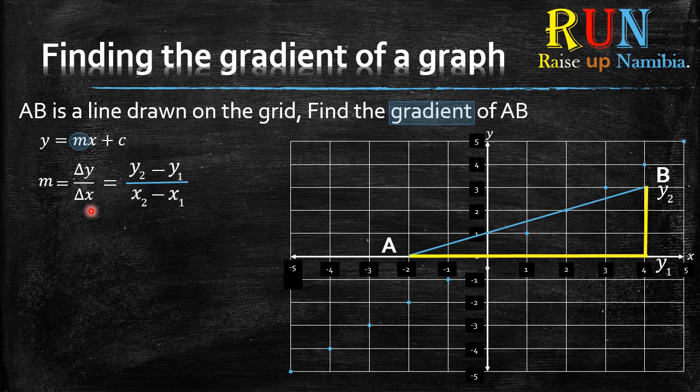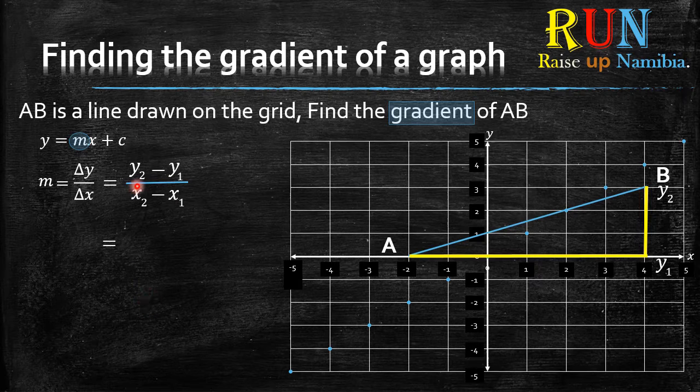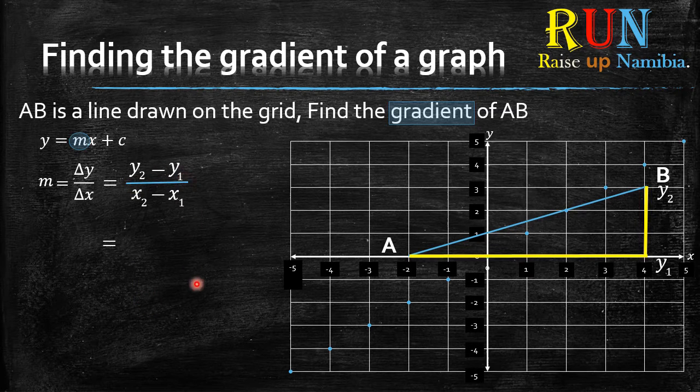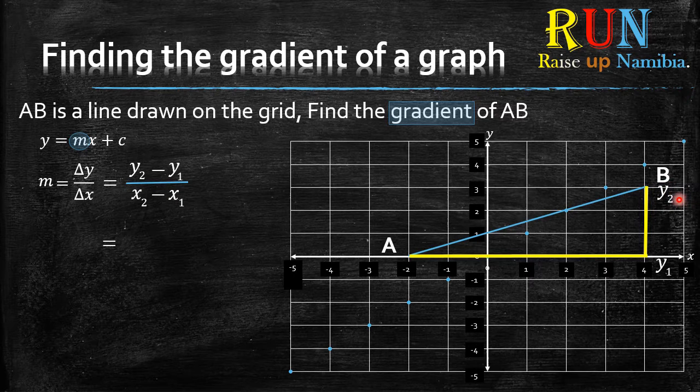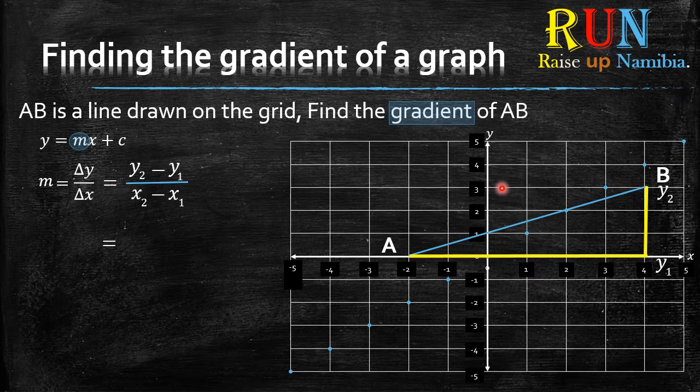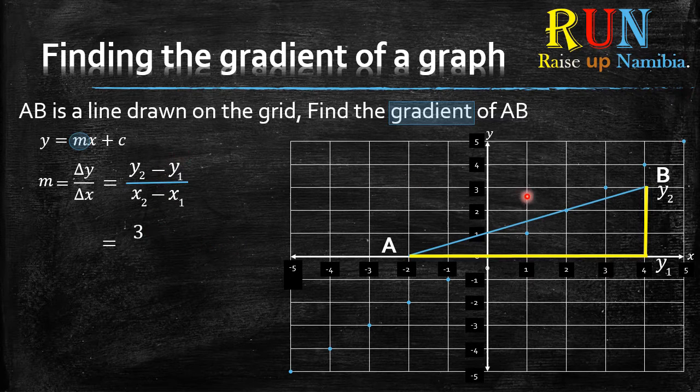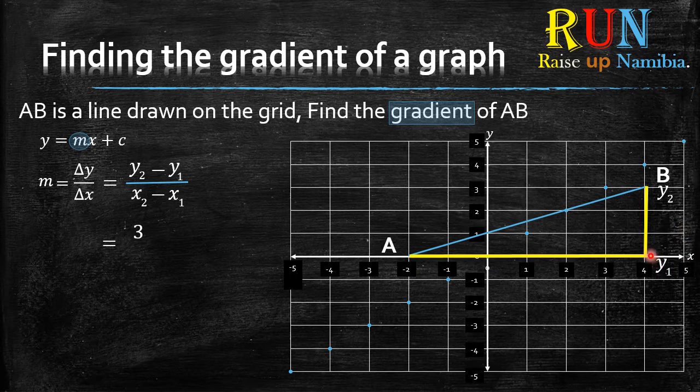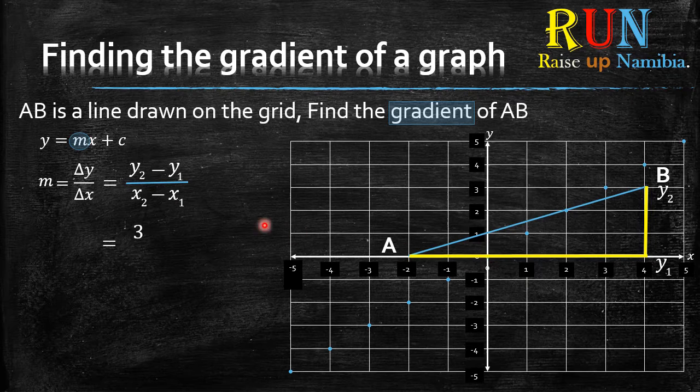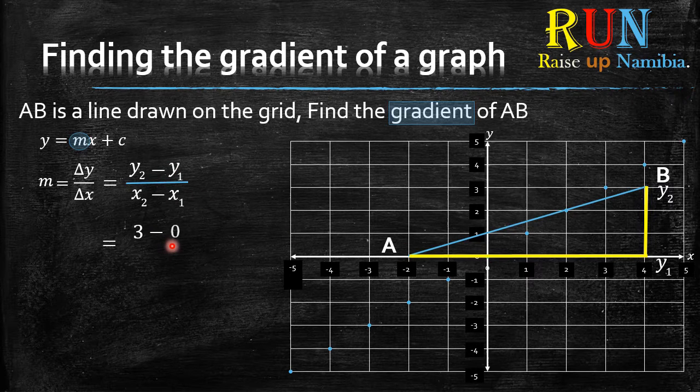And then now, using this formula, we know that on top, it's Y2 minus Y1. So now you check, if the highest point here is Y2, what is that point? You check on the Y axis, that point is positive 3. So you write down positive 3. According to the formula, minus Y1. So you check, what is Y1? Y1 is this point. On the Y axis, that point is a 0. So you say minus 0.